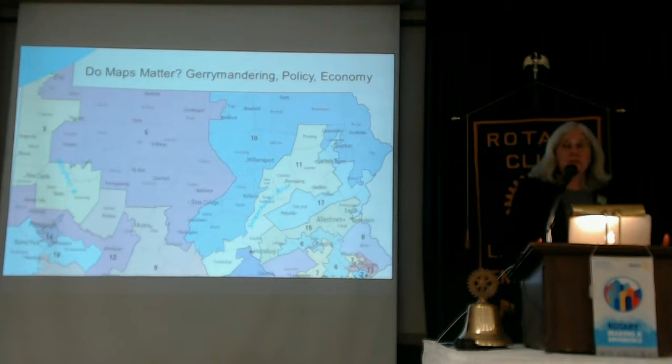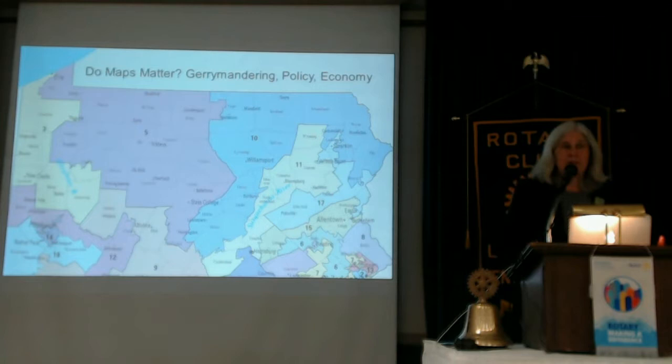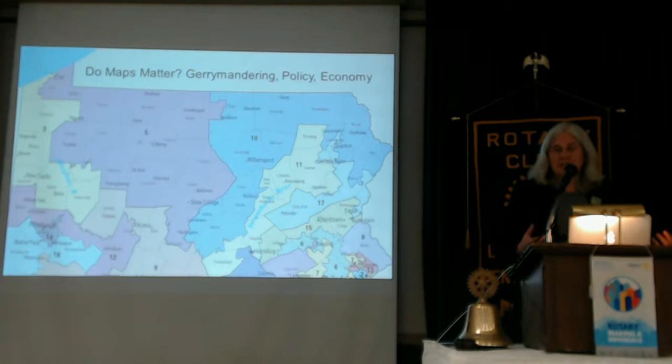Gerrymandering is a conflict of interest. There is no other democracy in the world that allows legislators any role in drawing the maps. It's kind of like letting a football team decide who the ref is going to be, where the starting line is going to be, and set up the rules for the next 10 years based on their own team advantage. We believe it shouldn't be that way. We're the only democracy that allows it — other than Malaysia.